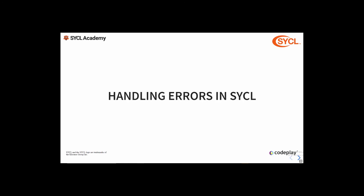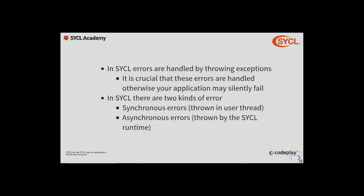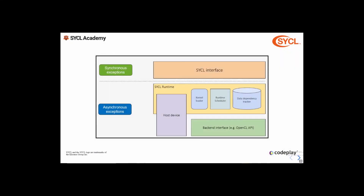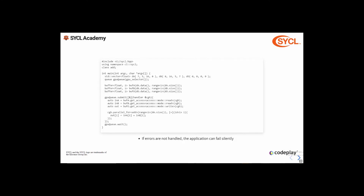Now that we've covered how to submit work to a queue, it's important to understand how to handle any errors that might occur. In SYCL, errors are handled by throwing exceptions, and it's crucial that these are handled as otherwise your application may fail silently. There are two main kinds of errors: synchronous errors, which are thrown directly to the user thread; and asynchronous errors, which are thrown by the SYCL runtime. Any error which occurs within the SYCL interface generates a synchronous error, but any error which occurs after a command group has been submitted generates an asynchronous error, because it may happen in another thread.